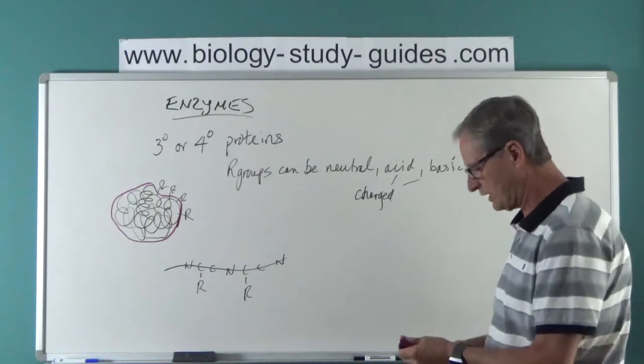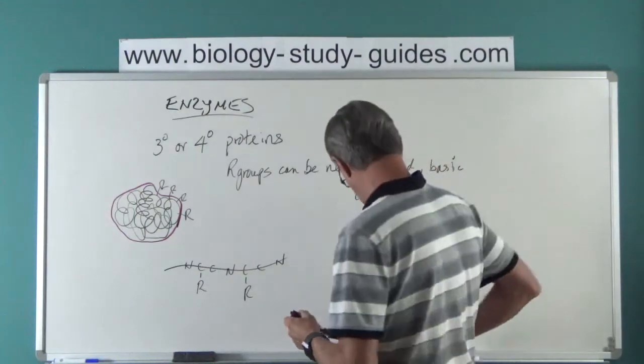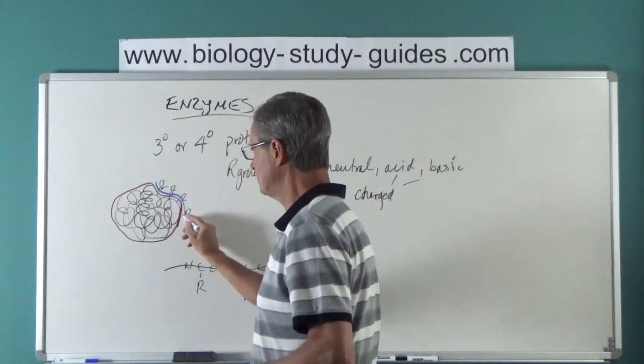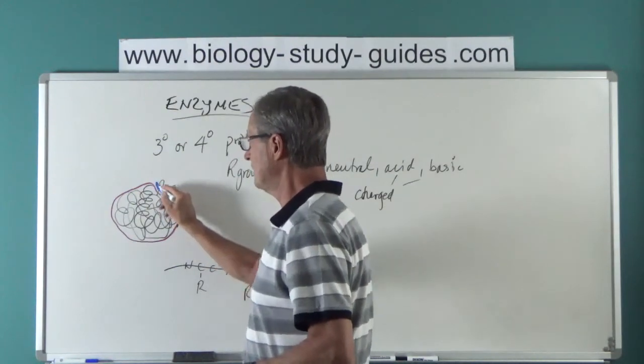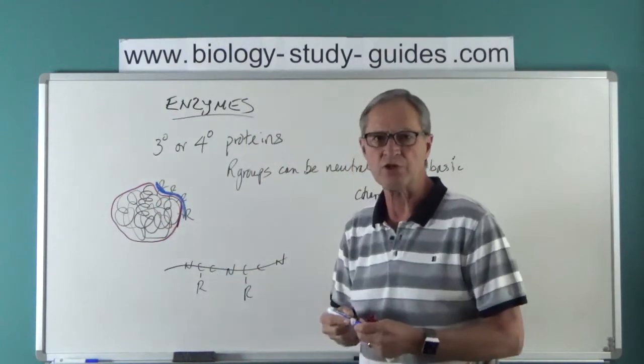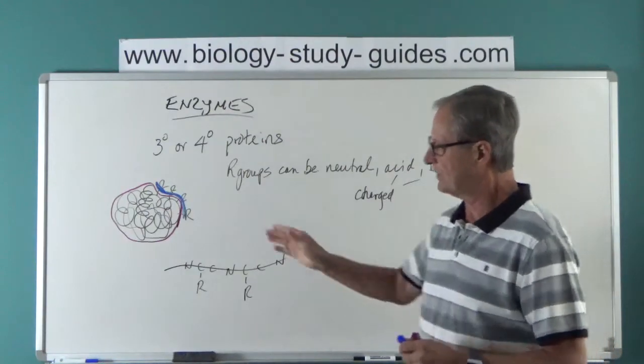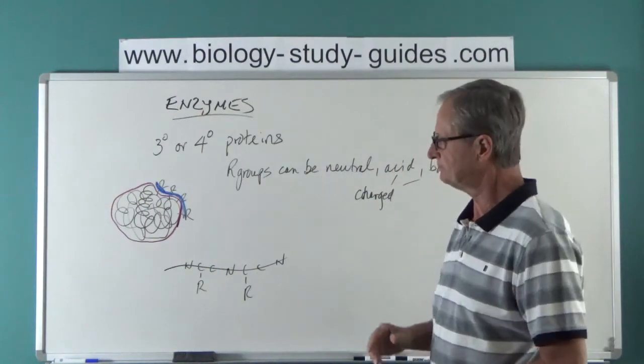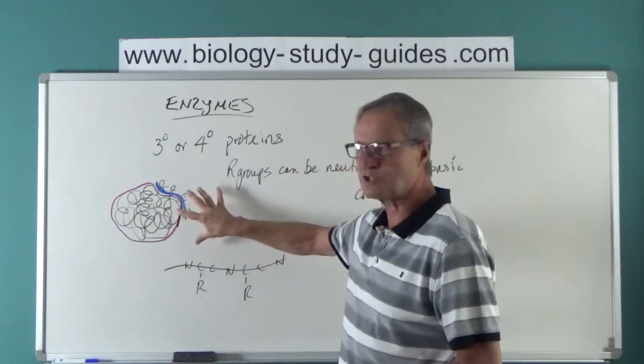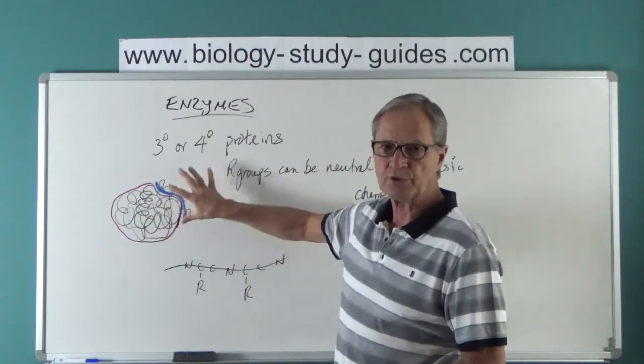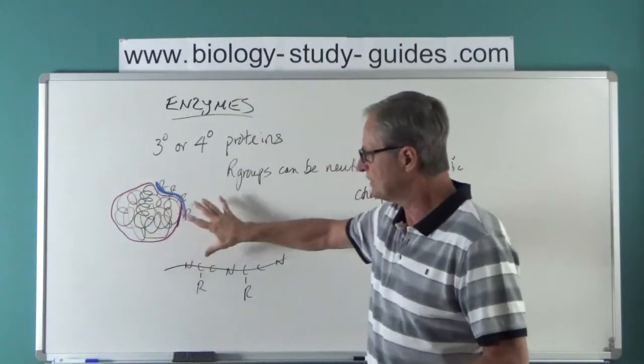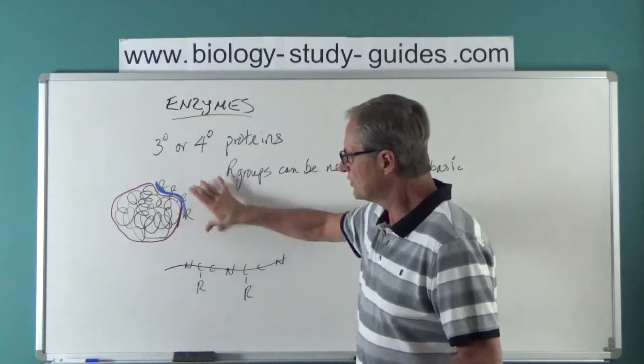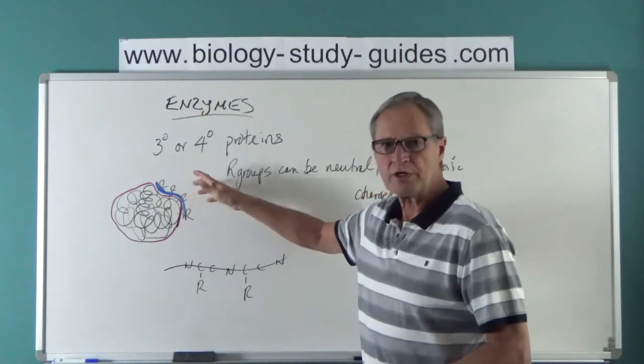Every enzyme has a particular location along its surface, and I'll just use this as that location, which is where the activity occurs. There's an active site, a part of the enzyme surface that is involved with the reaction. This topic gets explored in the next video, but please understand that enzymes are tertiary proteins and they have R groups which give them their own unique chemistry.